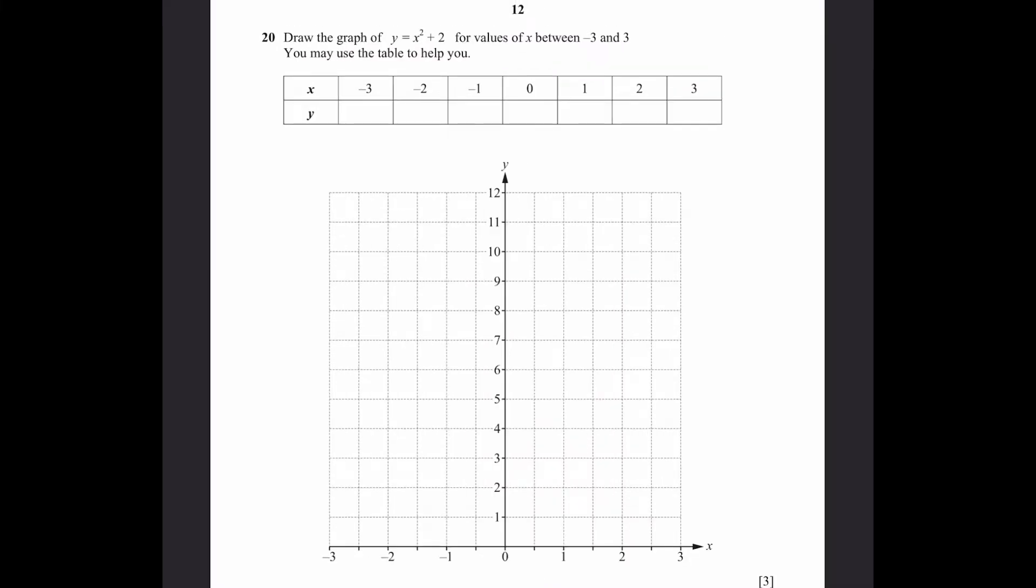Question 20. Draw the graph of y equals x squared plus 2 for values of x between minus 3 and 3. You may use the table to help you. x equals minus 3, y is equal to minus 3 the whole squared plus 2. That's 11. Now, for x equals minus 2, y equals 6. And using a similar procedure, we can write down all the values. And during the graph, we can just plot the points. Minus 3, 11, minus 2, 6, minus 1, 3, 0, 2, 1, 3, 2, 6, 3, 11.